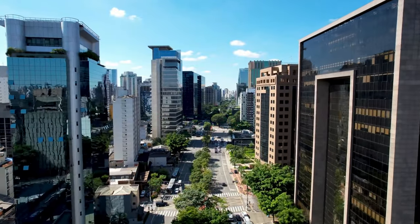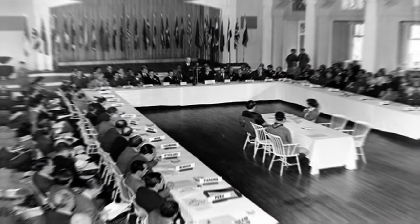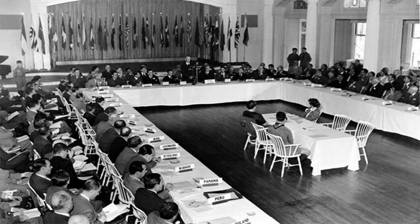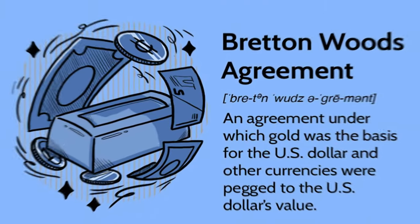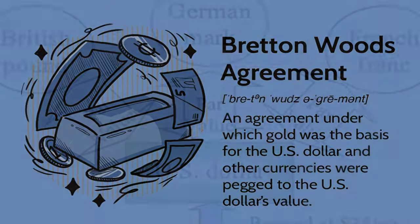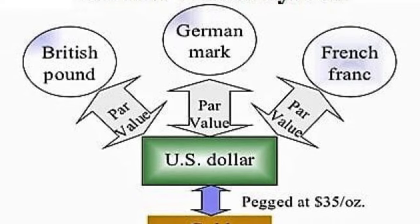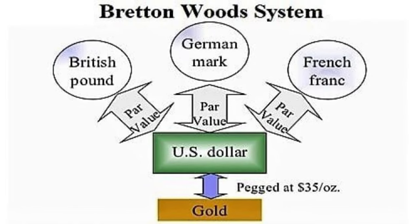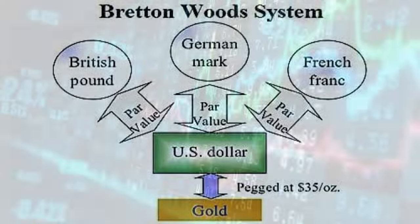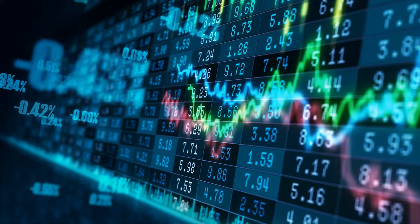To remedy this and other financial matters, 44 allied countries met in Bretton Woods, New Hampshire in 1944. An agreement was reached — the Bretton Woods Agreement — deciding that the US dollar was a stable currency to which all countries could link their own currency. This unassuming dollar became the backup for the world.